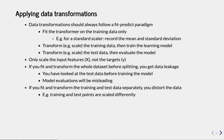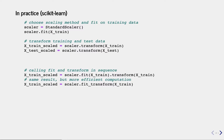Another mistake is fitting and transforming the training and test data separately — so you fit and transform the training data, and then again fit and transform on the test data. This means you compute the mean and standard deviation on the test data alone. That will cause distortion: the training and test points relative to each other will be different — they're scaled differently. We'll look at examples about that in a minute.